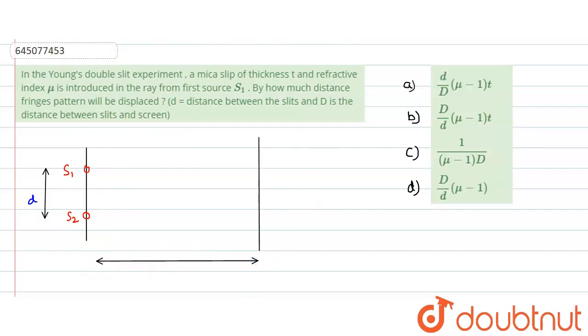Now in Young's double slit experiment we generally assume that our small d would be very very less than our capital D. So in this case our path difference could be written as y times small d divided by capital D.